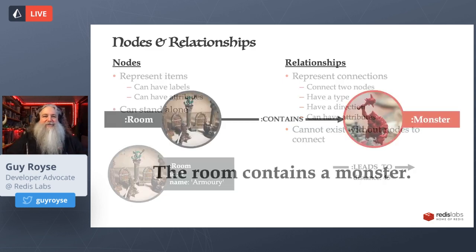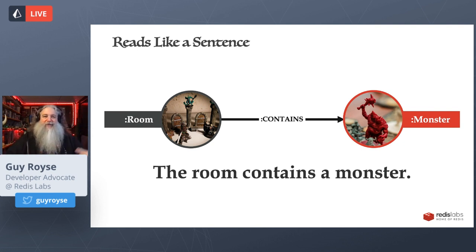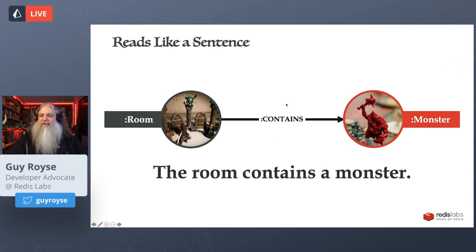Relationships also tend to read like a sentence — specifically a transitive sentence. So you have a subject, a transitive verb, and a direct object: the room contains a monster. That directionality reflects that transitive sentence nature. You could flip the directionality and say 'the monster is contained by the room' — the passive voice — but as my English teacher told me, the passive voice is to be avoided by zombies. So they tend to read like a sentence.